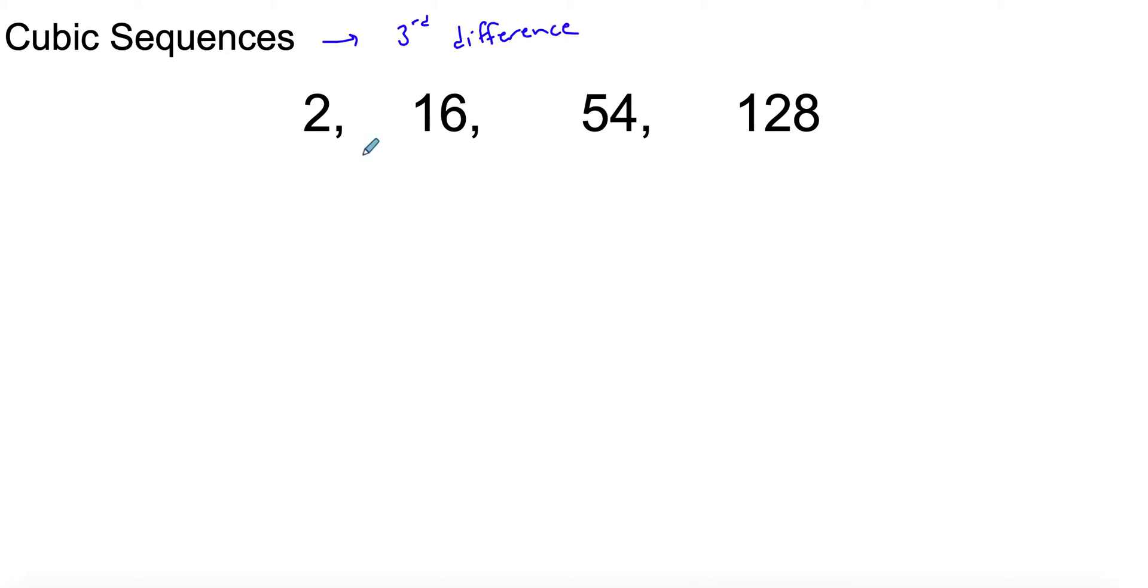We'll start with just subtracting the values here and continuing through. So this is 14, then 38, then 54, 74. Here I don't have a constant difference, so it's not a linear sequence or an arithmetic sequence.